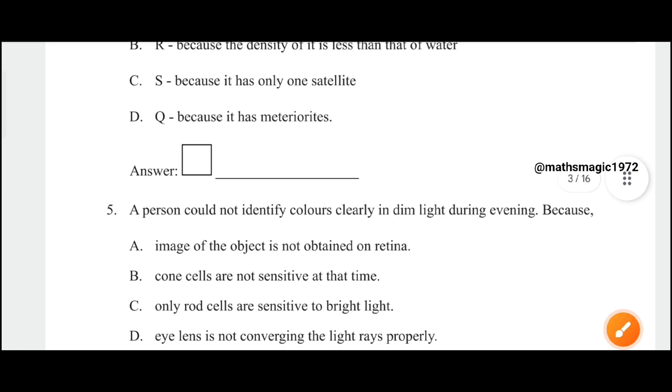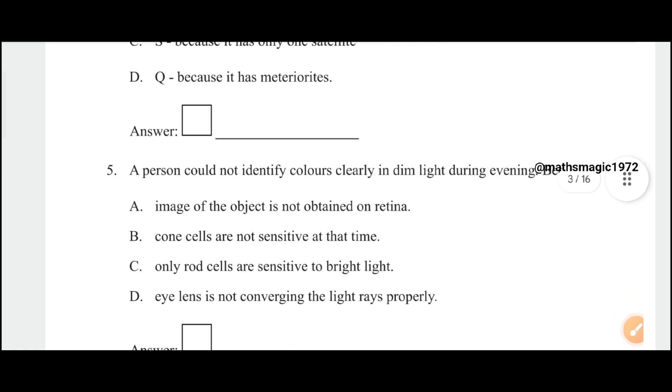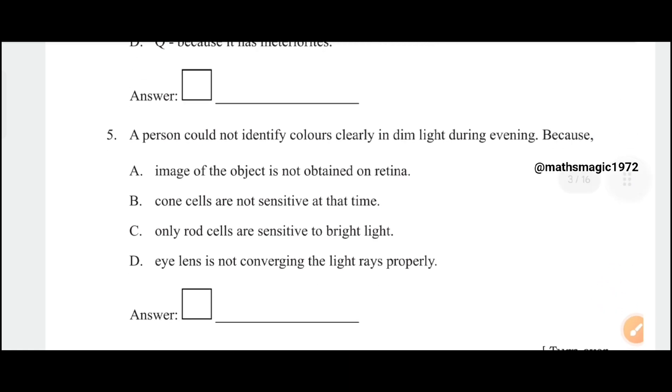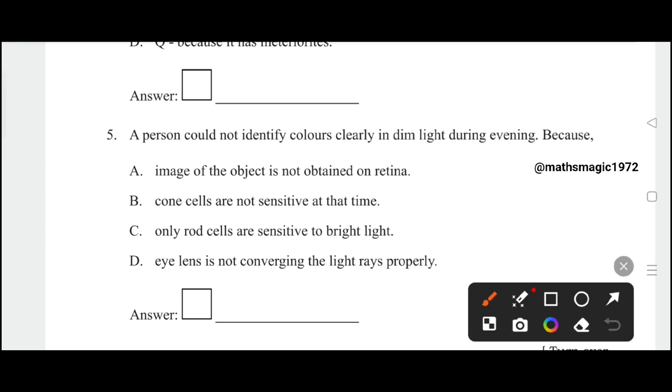A person could not identify colors clearly in dim light during evening because: A) image of the object is not obtained on retina, B) cone cells are not sensitive at that time, C) only rod cells are sensitive to bright light, D) eye lens is not converging the light rays properly. The correct answer is option B, cone cells are not sensitive at that time.